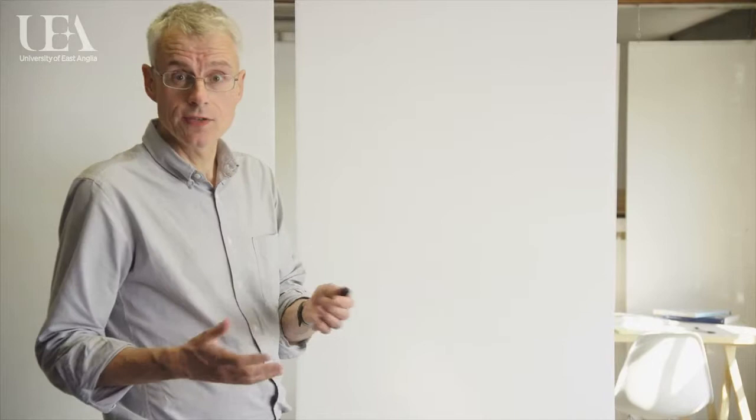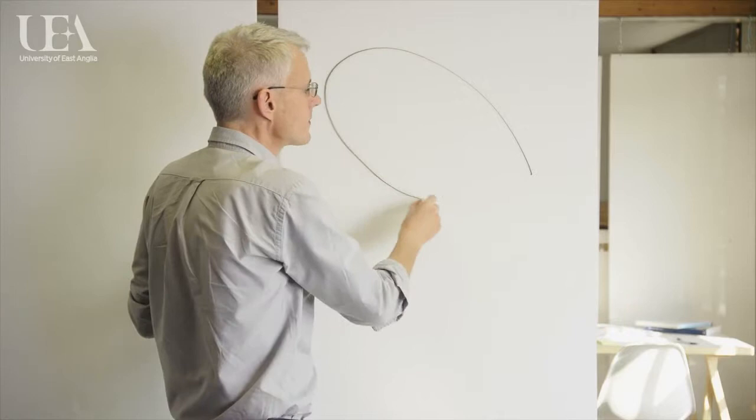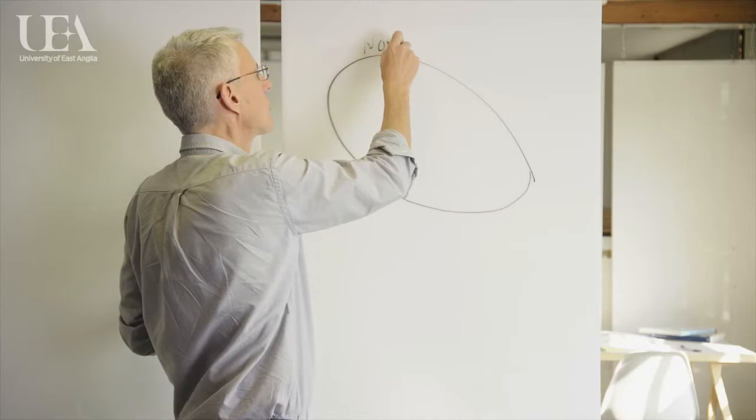It consists of two circles that overlap. So there's the first one, and the first one is about the outside world, and the second one is about the inside world of you, the client.